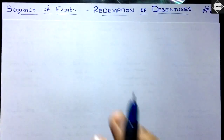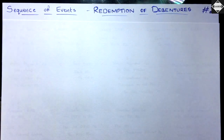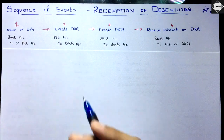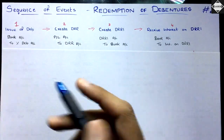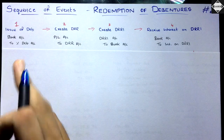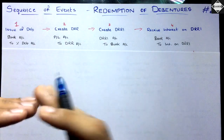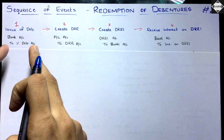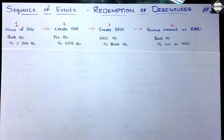Now let's get to the main content — the sequence of events from issue of debentures to redemption, along with the general entries. First event: Issue of debentures. When debentures are issued, money comes in, so Bank Account debit. A liability is created: Debit Bank Account, Credit Dash-Percentage Debentures Account at face value only. If issued at premium — say ₹110 against face value ₹100 — only ₹100 goes to the Debentures Account, and the extra ₹10 goes to Securities Premium.